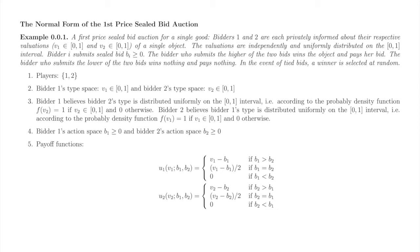From Bidder 1's point of view, the salient feature of Bidder 2 is Bidder 2's valuation, V2. Bidder 1 does not know who she is bidding against, in the sense that Bidder 1 does not know Bidder 2's type. However, Player 1 is not completely clueless about who Bidder 2 might be. Bidder 1 knows the distribution of Bidder 2's type. Similarly, Bidder 2 knows the distribution of Bidder 1's type. We'll often use the uniform distribution on the 0-1 interval simply because it is mathematically tractable in many settings.